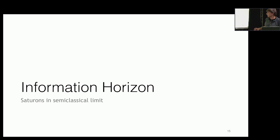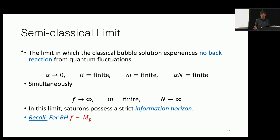In the semi-classical limit — we make a big deal about the fact that a black hole doesn't reveal information — but this is exactly what is happening here. The semi-classical limit means you take a fixed radius of an object, take the coupling to zero, while simultaneously keeping the collective coupling finite.